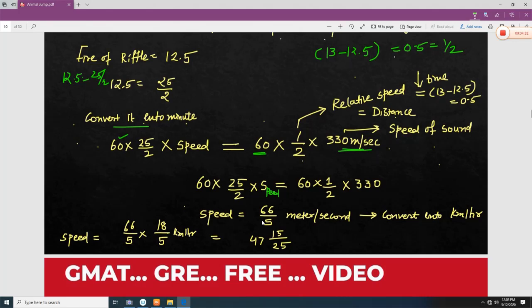So here we can find 60 into 25 by 5 into speed. Speed is equal to 60 into one half into 330. So speed is equal to 66 divided by 5 meter per second. And you have to convert this meter per second into kilometers per hour. So for that you have to multiply by 18 over 5. So your answer is 47.52 kilometers per hour.